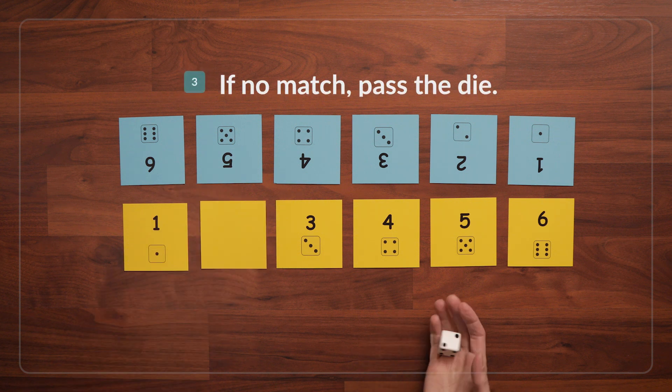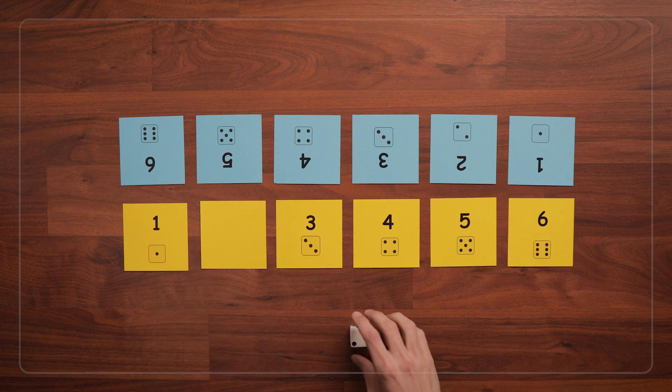Now roll again. If the next number you roll does not match any of your face-up cards, pass the die to the next player.